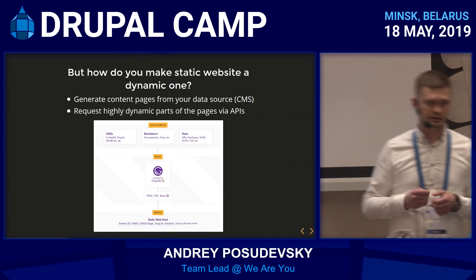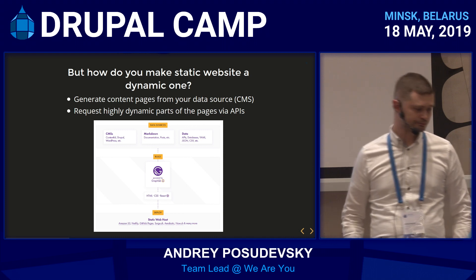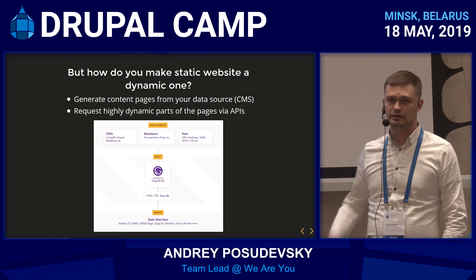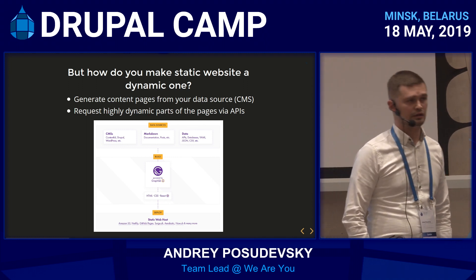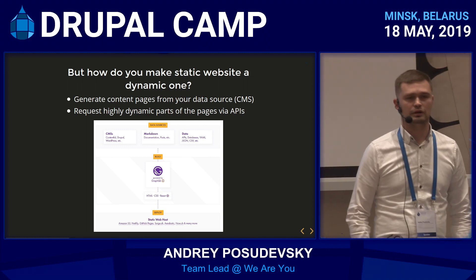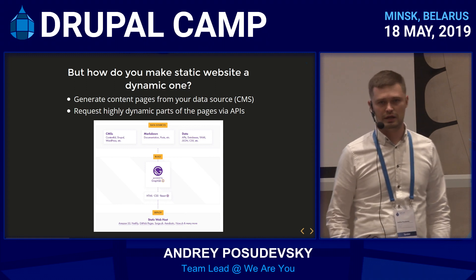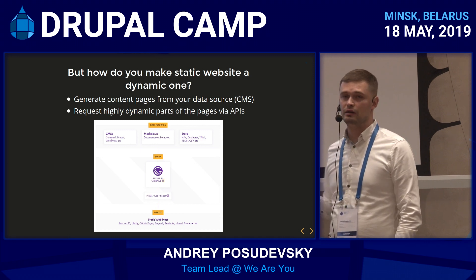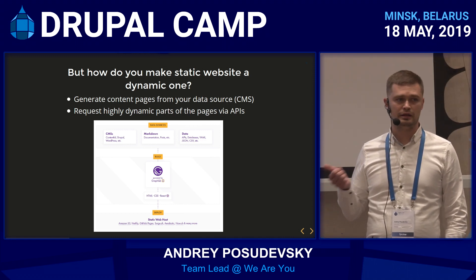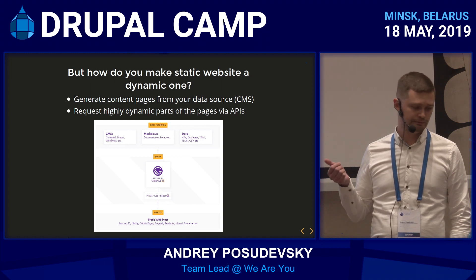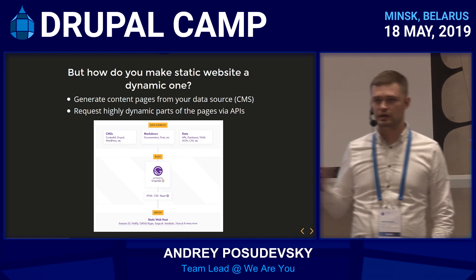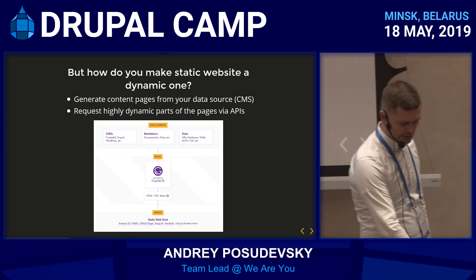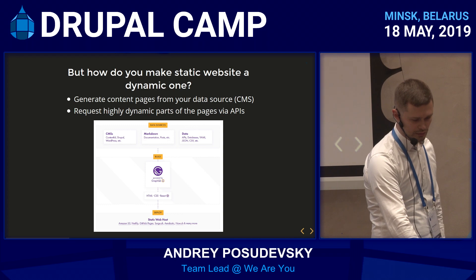But how do you make a static site a dynamic one? You can generate pages from your data source — in our case, it's Drupal. And you can request highly dynamic parts of web pages through your APIs. For example, if you want a user profile or some personalized data based on user data, where the user has to be logged in — this kind of personalization you can do with calls to APIs.